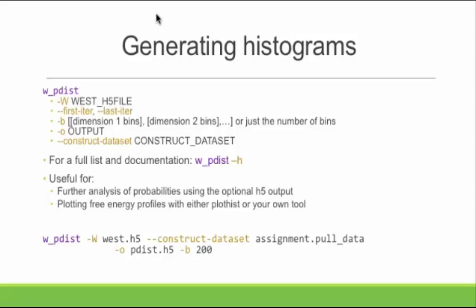Dash W (capital W) takes in the master H5 file. Then you can give a first iteration and a last iteration. You can give the histogram bins, or just a number of bins, and it will find bins automatically for you. The number I like for larger coordinates is about 200. This will change the resolution of the final graph, and you can change it around however you please.